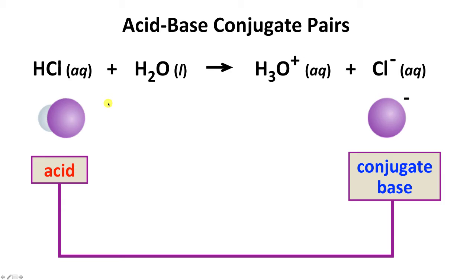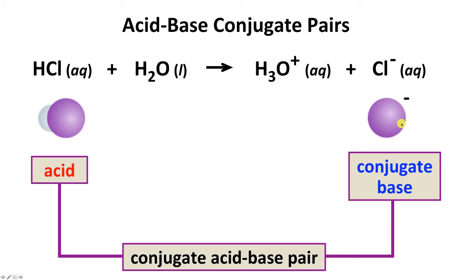If we could go in reverse — we can't because HCl is a strong acid that fully dissociates — Cl- could accept a proton from H3O+ to make HCl, functioning as a base. So HCl is an acid, Cl- is its conjugate base, and together we call them a conjugate acid-base pair.